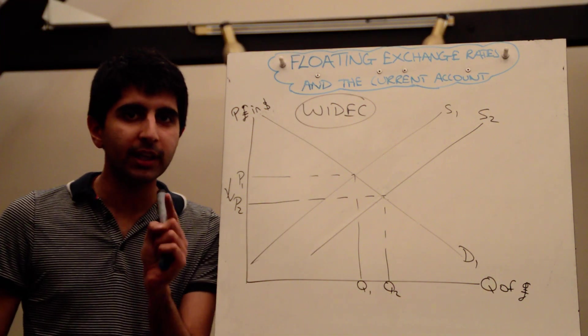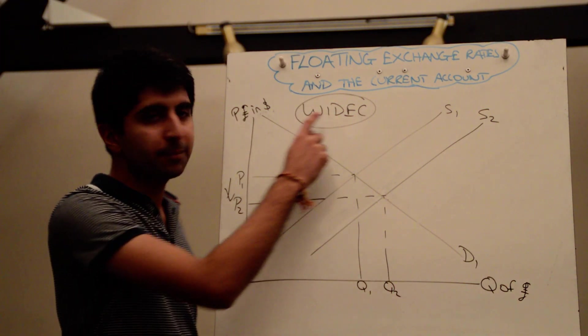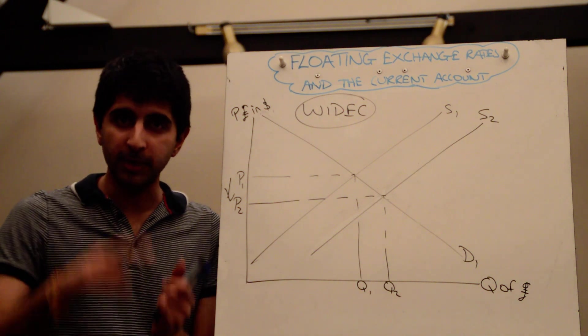And remember, what are we measuring in the current account? We're not measuring quantity, we're measuring the value. So if we're saying the expenditure on imports is actually falling, it means there is less money leaving the economy, good for our current account.